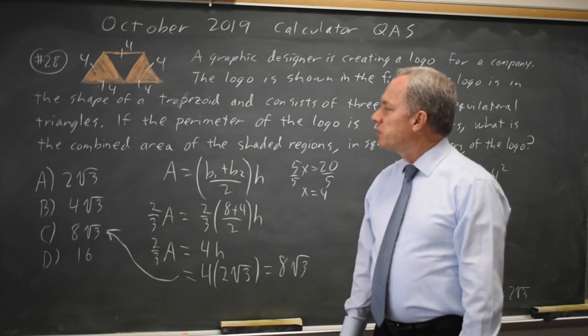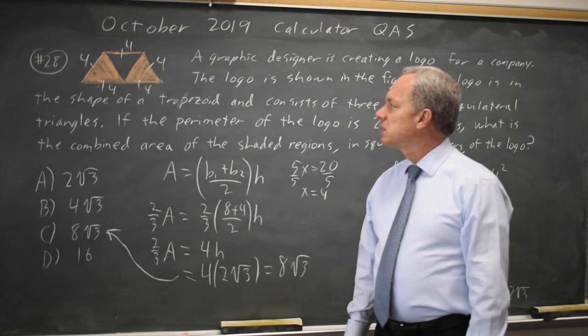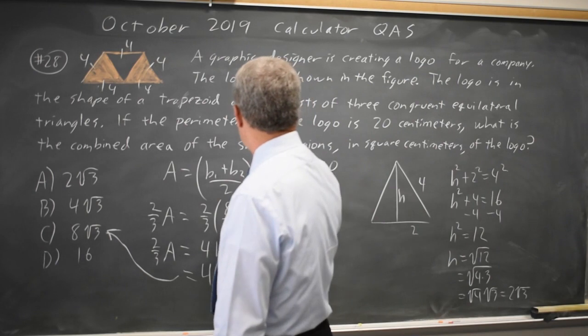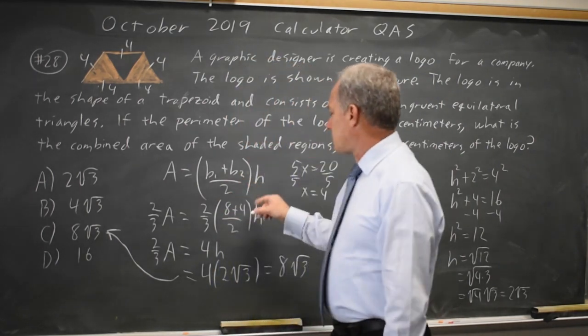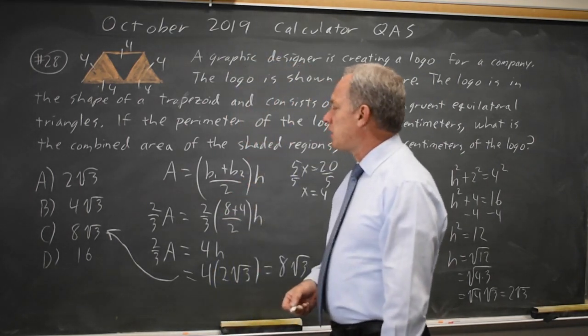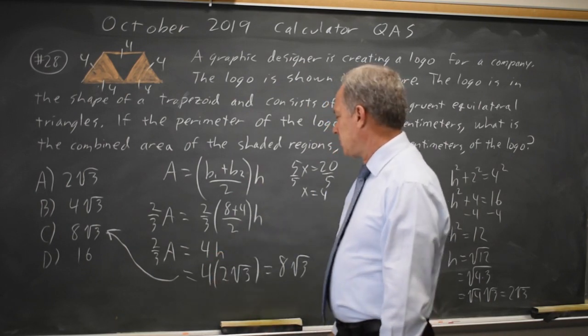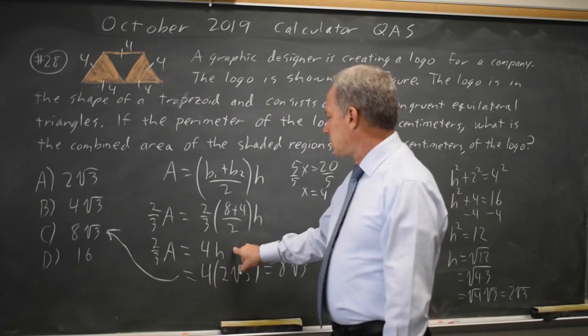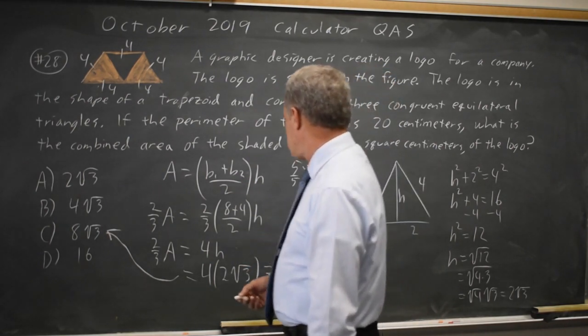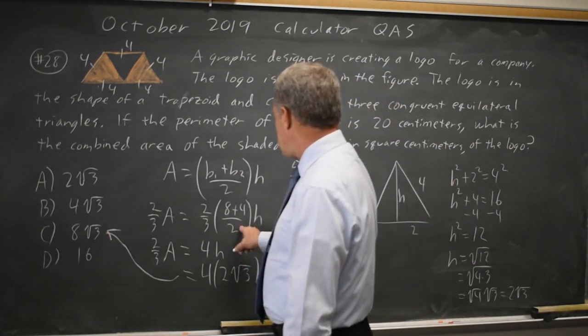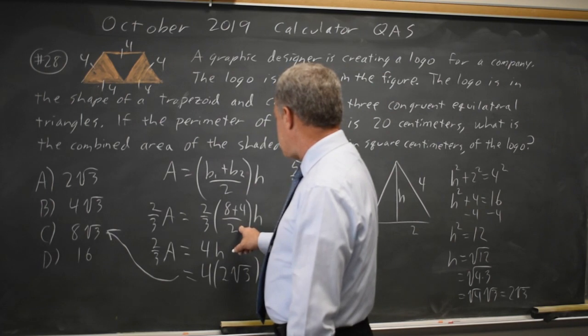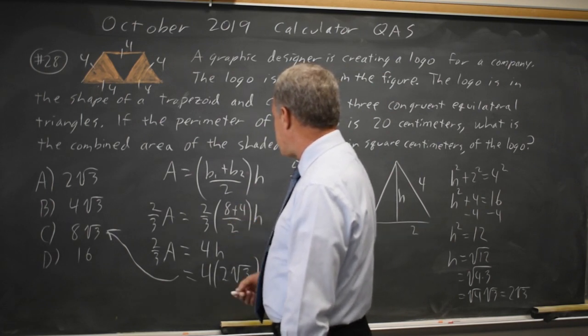Alternatively, you can look at this as average base times the height. We know the height is less than 4.